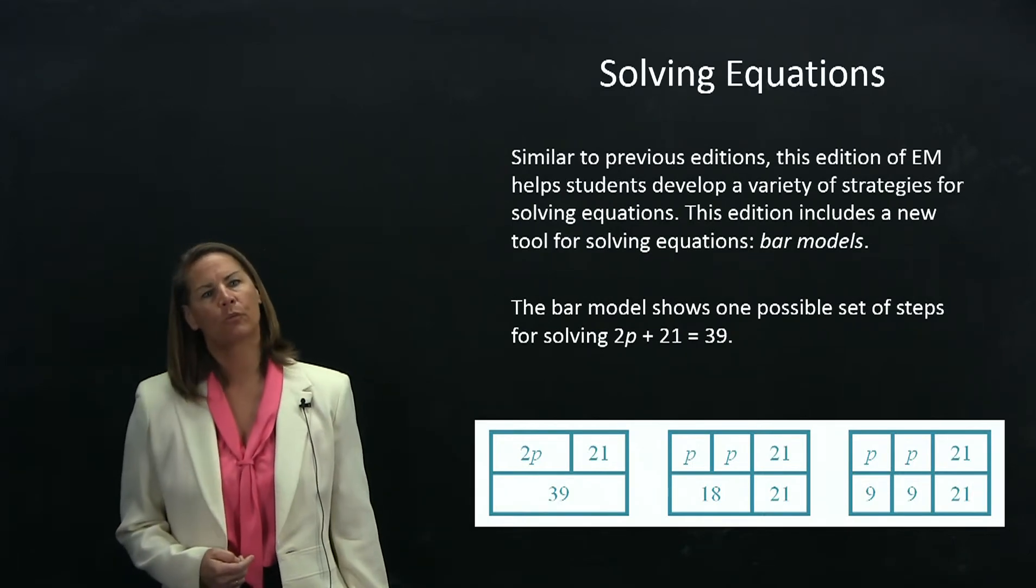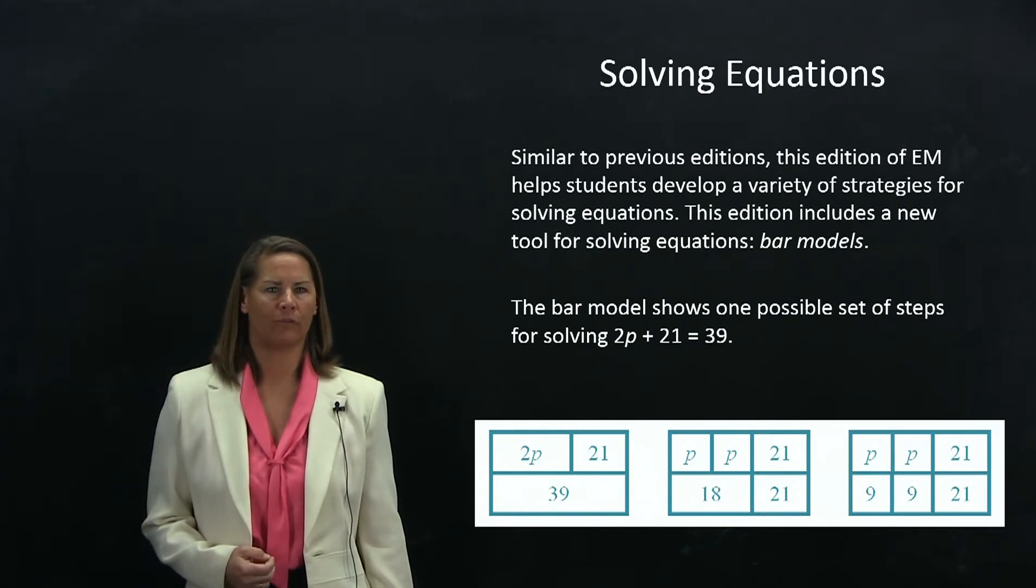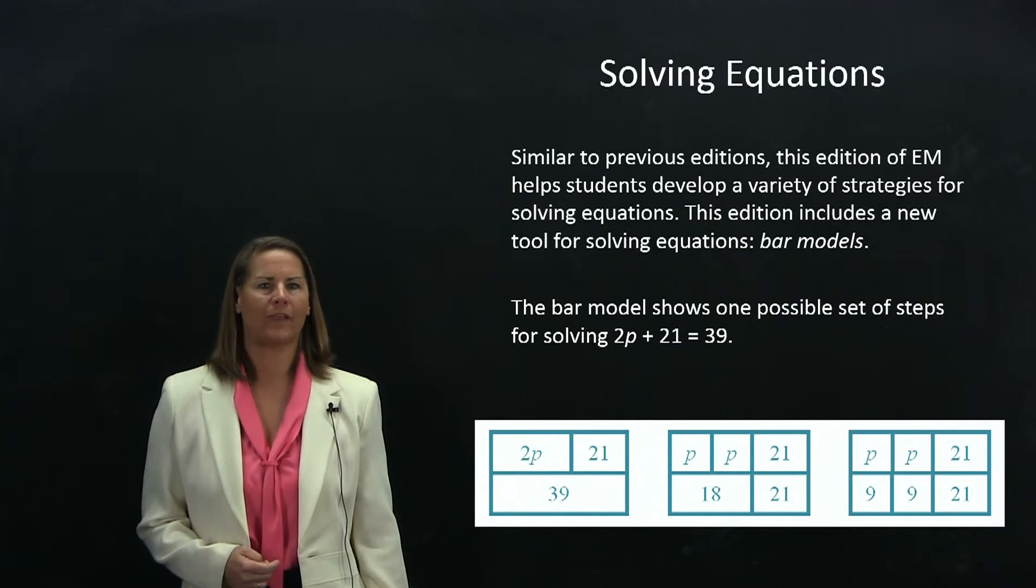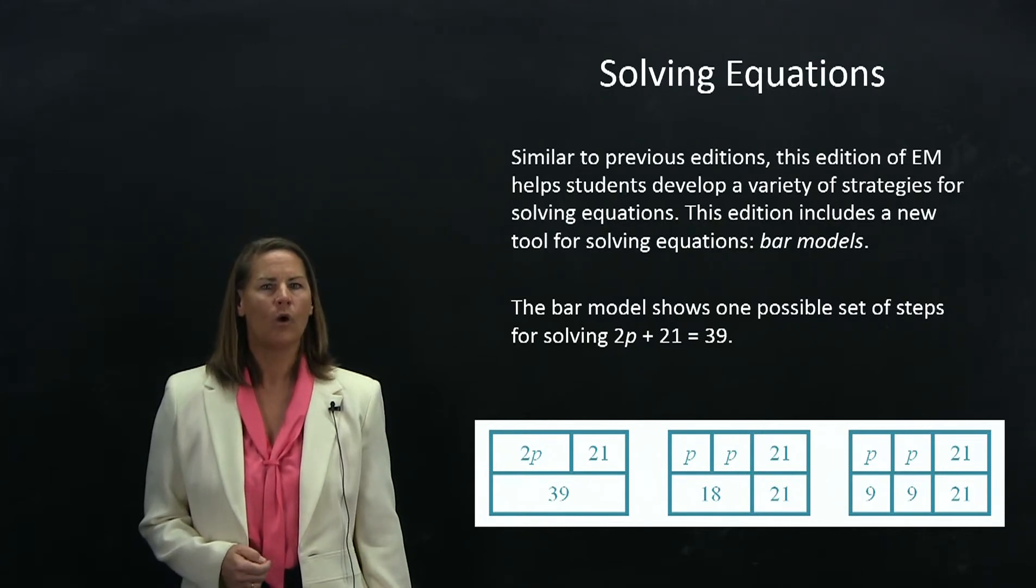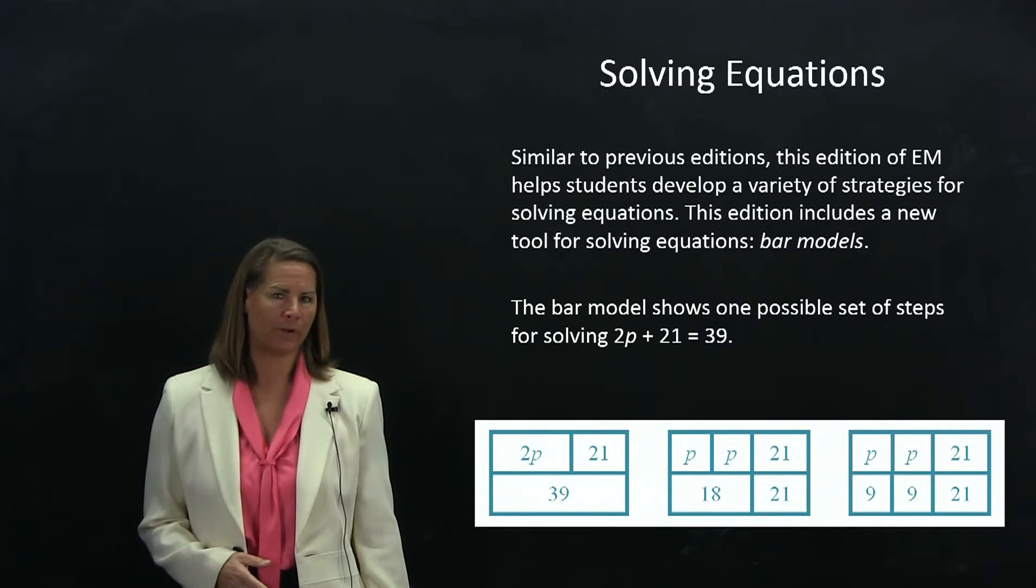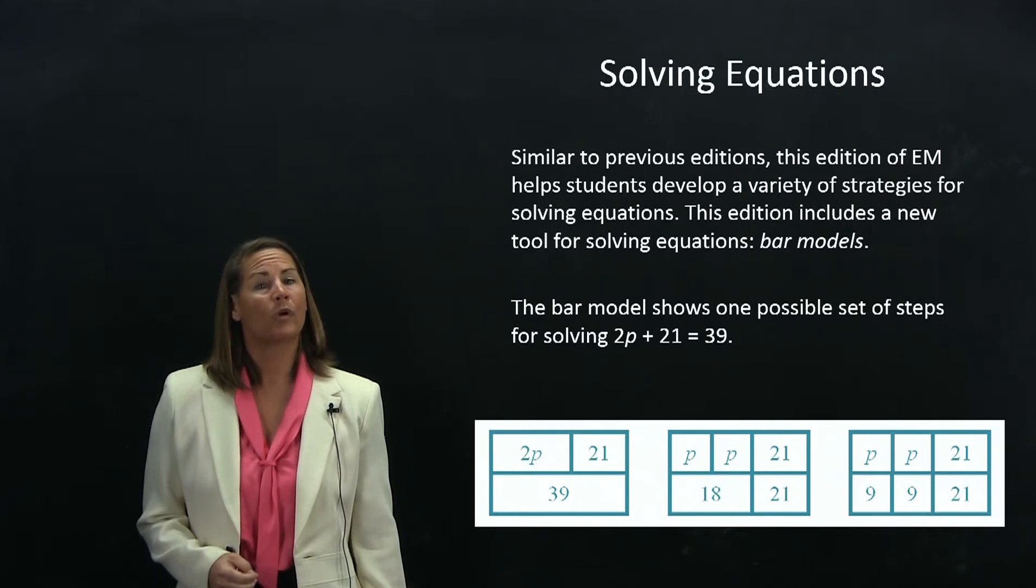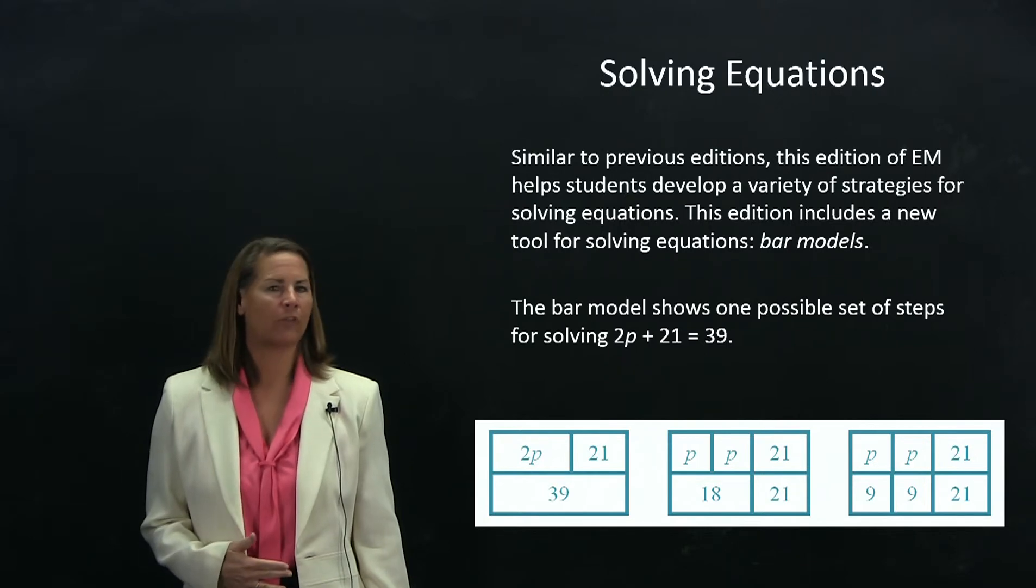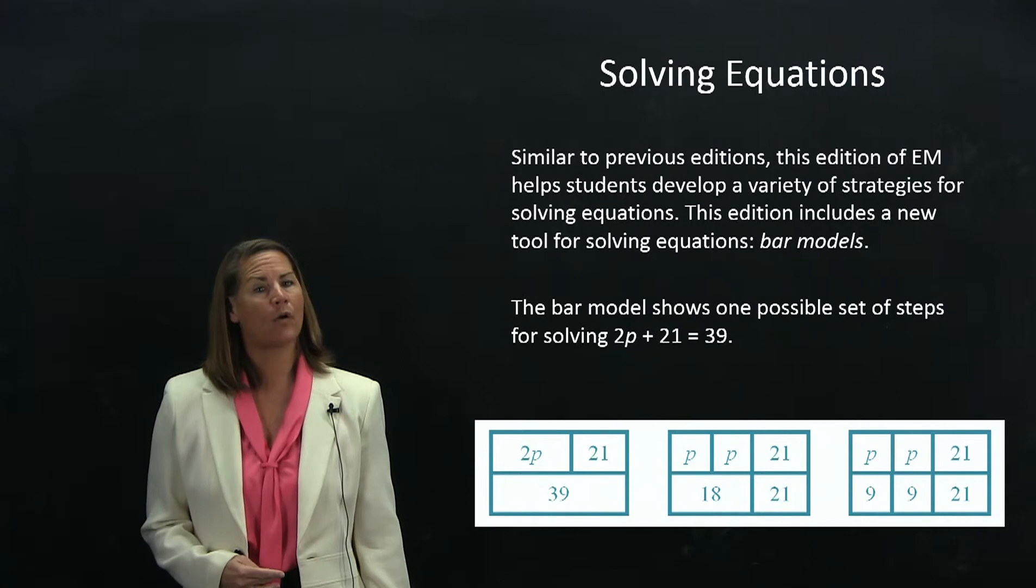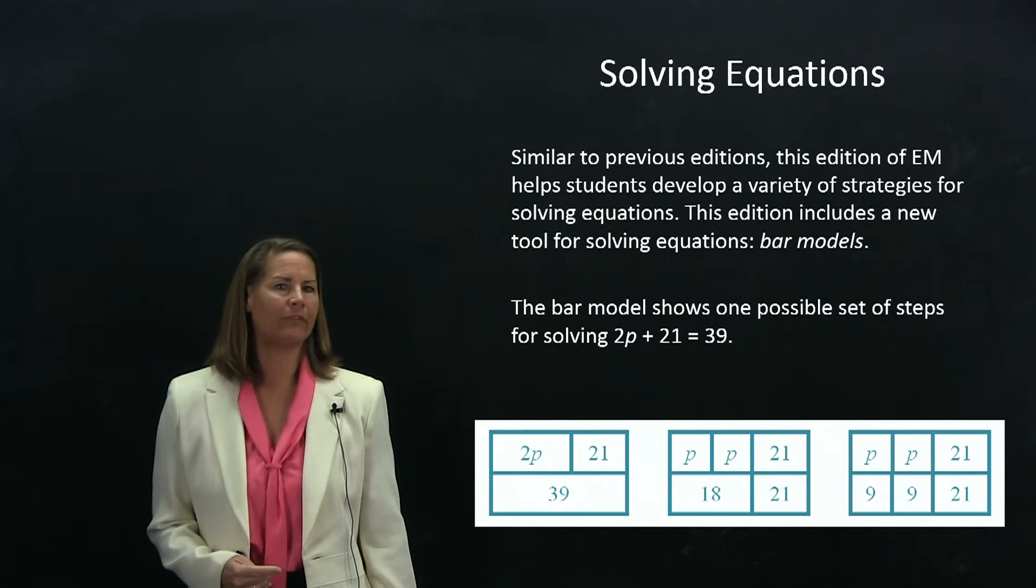Moving on to the third major work domain, expressions and equations. Everyday math has always been really strong in this strand, with kids thinking about equivalent expressions and how they generate equivalent equations and solve equations. There are many strategies you've always seen in everyday math for solving equations. But there was one model in the Common Core standards that was very successful in field testing and that was the bar model. This is now appearing in the program in lessons in sixth grade.